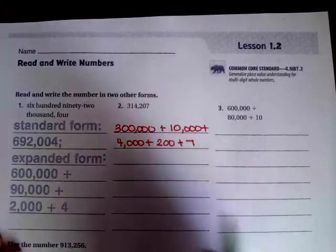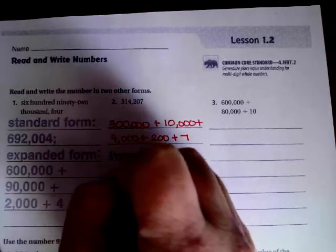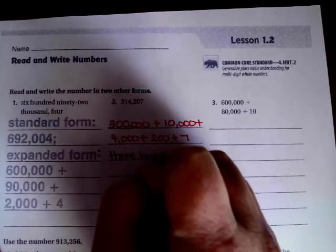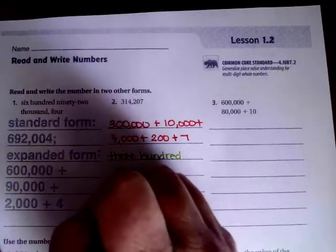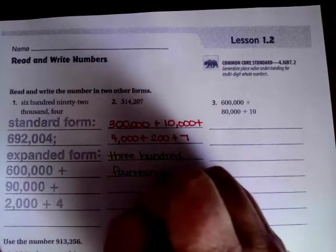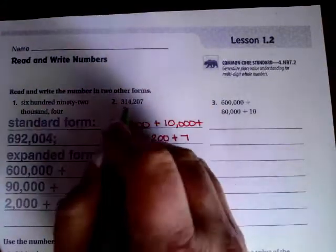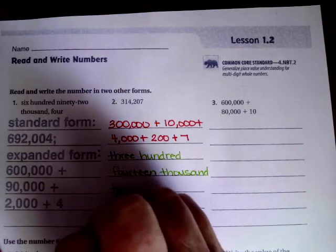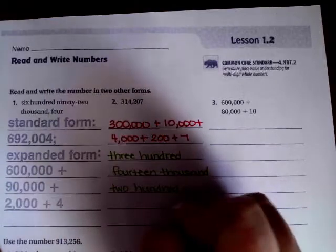Now we're going to write it in word form since it shows standard and we just did expanded. We're going to say three hundred and fourteen thousand, two hundred and seven.